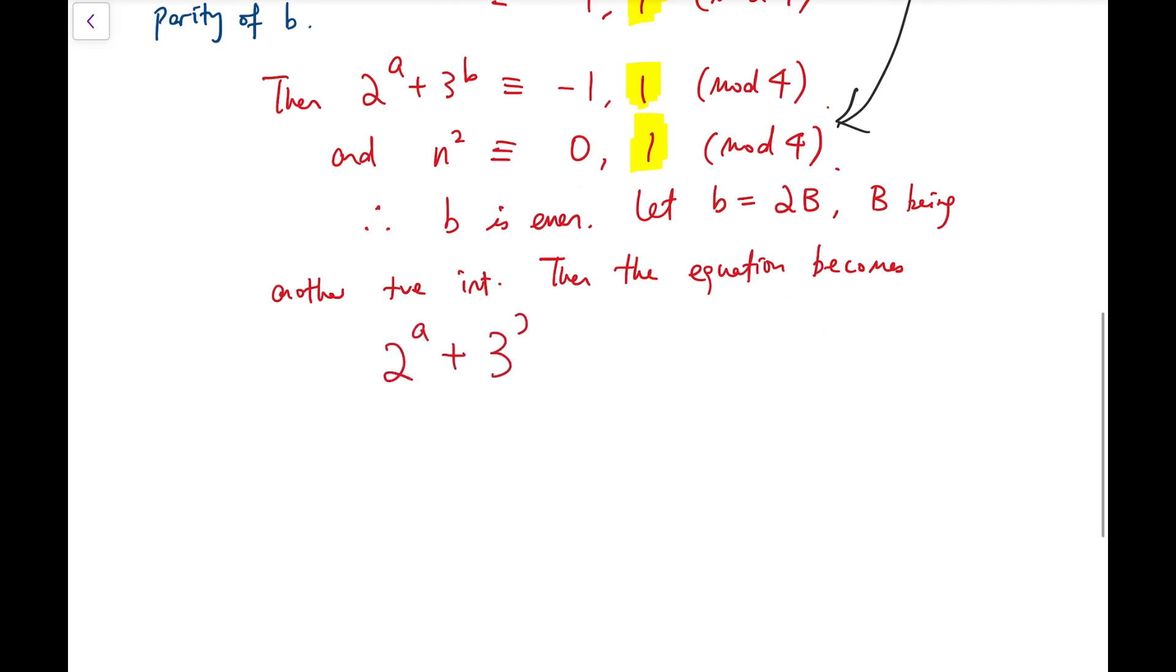Then the equation becomes 2 to the power of a plus 3 to the power of 2B equals n squared. Now, this equation becomes easier to solve.